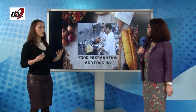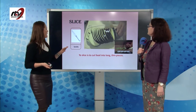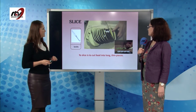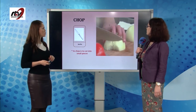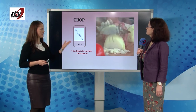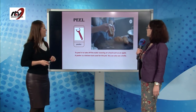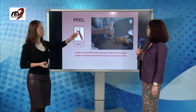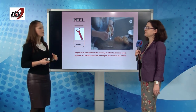Now it's time to talk about cooking — how we prepare food. Here are some verbs. Slice: to cut into long, thin pieces. In order to cut slices, you need a knife. Chop: another way of cutting, but this time in very small pieces. You also use the knife. Peel: to take out the outer covering of a food, such as an apple or a potato. A peeler is a kitchen tool used for this job, but you can also use a knife.